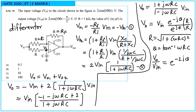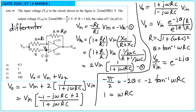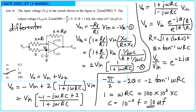The phase difference between output and input is −π/2. So −π/2 = −2θ = −2·tan⁻¹(ωRC), giving tan⁻¹(ωRC) = π/4. Therefore tan(π/4) = 1 = ωRC. With ω = 100 and R = 1 kΩ: 1 = 100 × 10³ × C, so C = 10⁻⁵ F = 10 μF. The answer is 10 μF, option C.